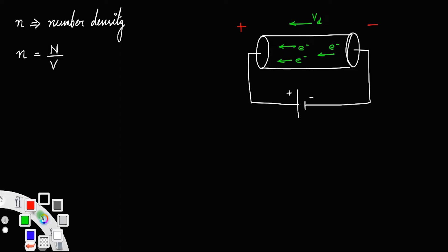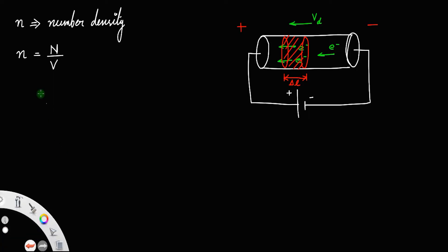Let us take a small cylindrical region inside this conductor. Let delta l be the thickness of this region. We have drift velocity Vd = delta l divided by time. Therefore, delta t will be delta l divided by drift velocity. Let us call that equation number one.